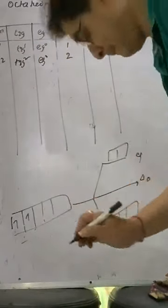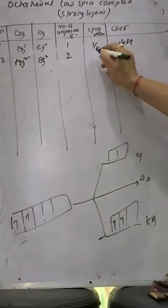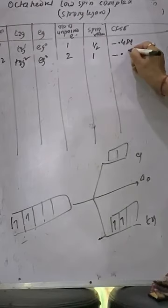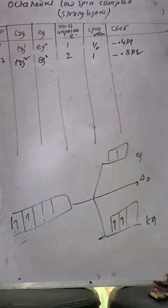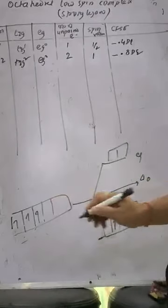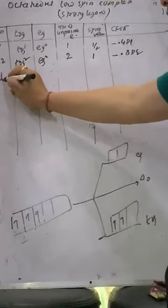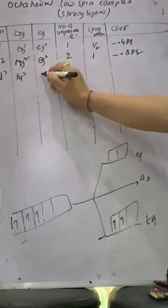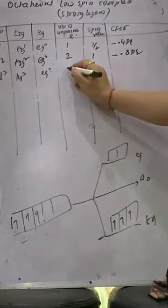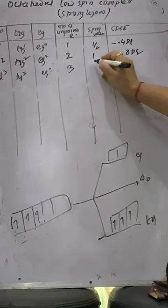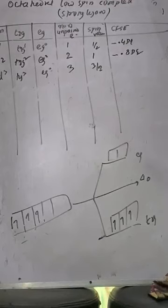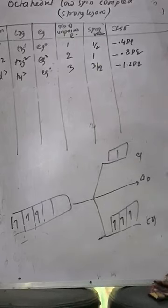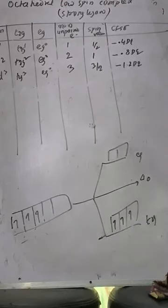For D3: T2G3, EG0, unpaired electrons = 3, spin = 3/2 (half + half + half), CFSE = minus 1.2 DQ, which is 0.4 + 0.4 + 0.4. Then D4: in a low spin complex, strong ligands cause pairing, so the electron pairs in T2G. D4 gives T2G4, EG0, unpaired electrons = 2, spin = 1, CFSE = minus 1.6 DQ.